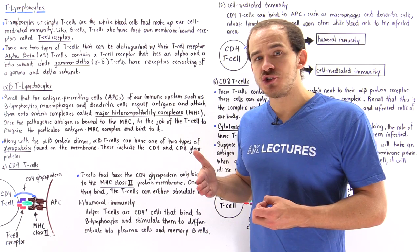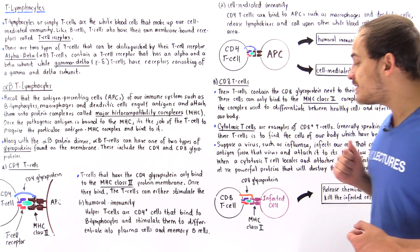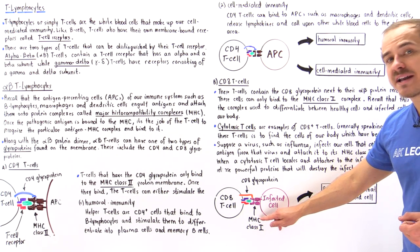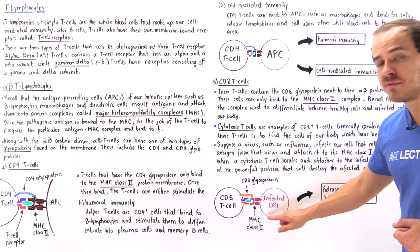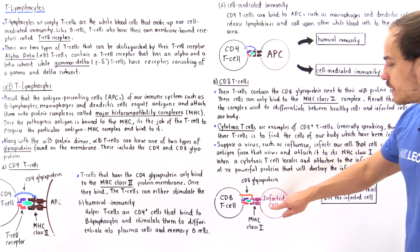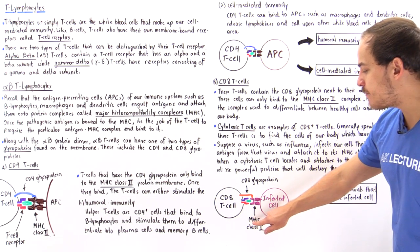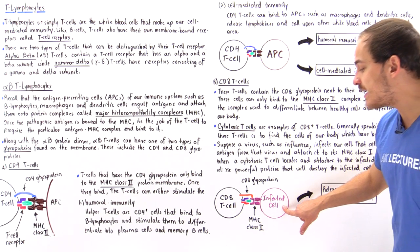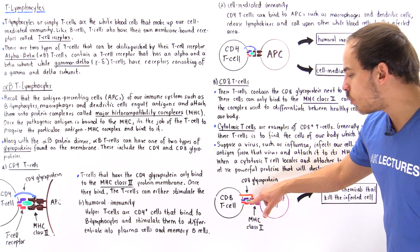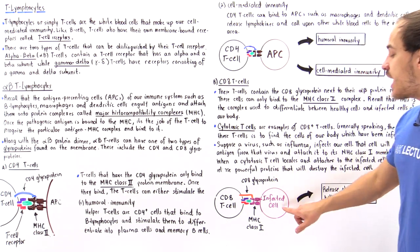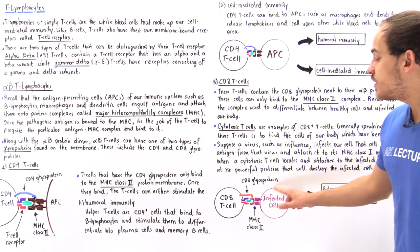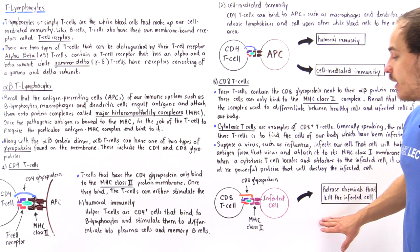The infected cell places that antigen onto the major histocompatibility complex class I, as shown in the diagram. This is the MHC class I of the infected cell, and the green portion is the antigen that came from the viral agent that infected our cell.